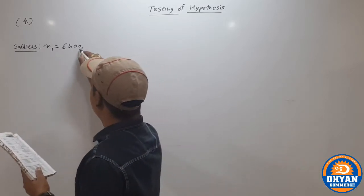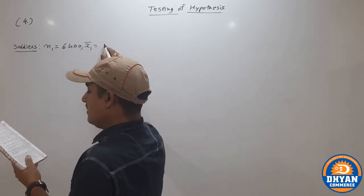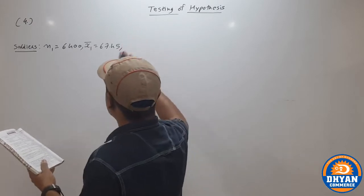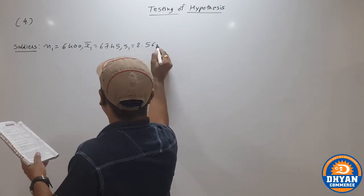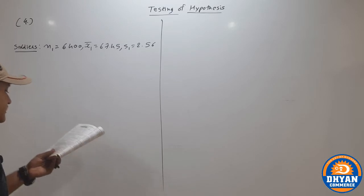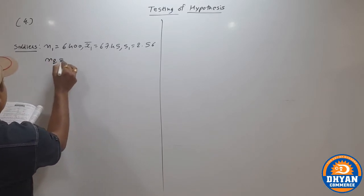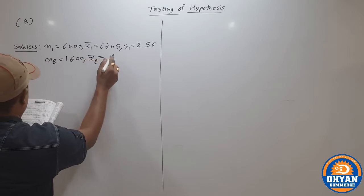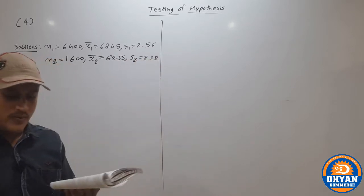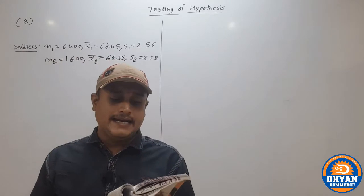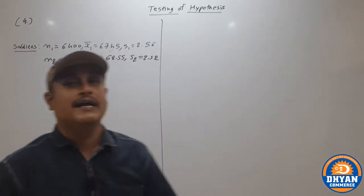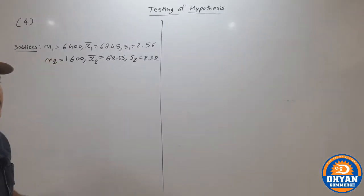For soldiers we have x1 bar = 67.45 and s1 = 2.56. Similarly, a sample of heights of 1600 sailors has a mean of 68.55 and standard deviation 2.52. So n2 = 1600, x2 bar = 68.55, s2 = 2.52. The question asks: do the data indicate that sailors are on average taller than soldiers?